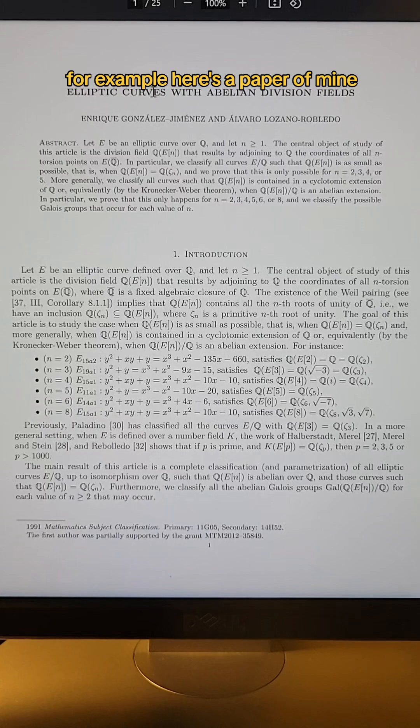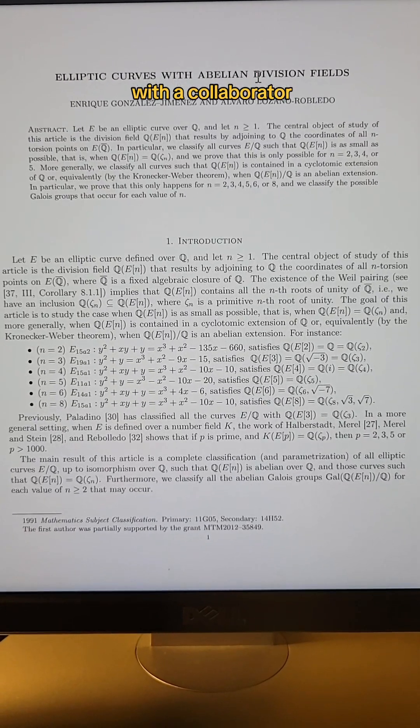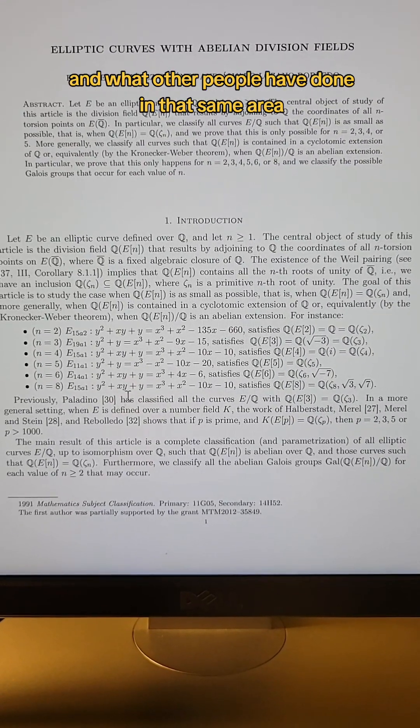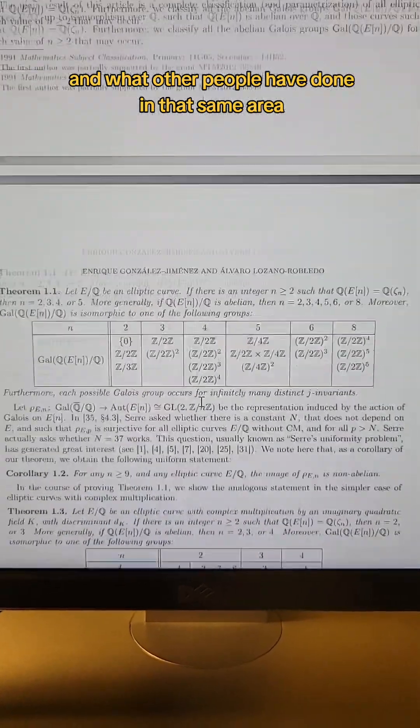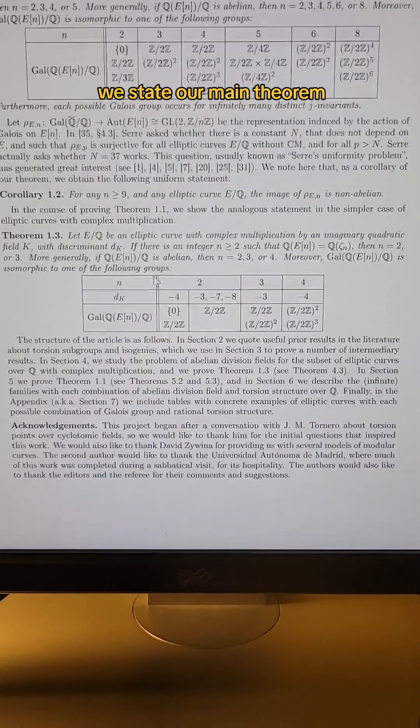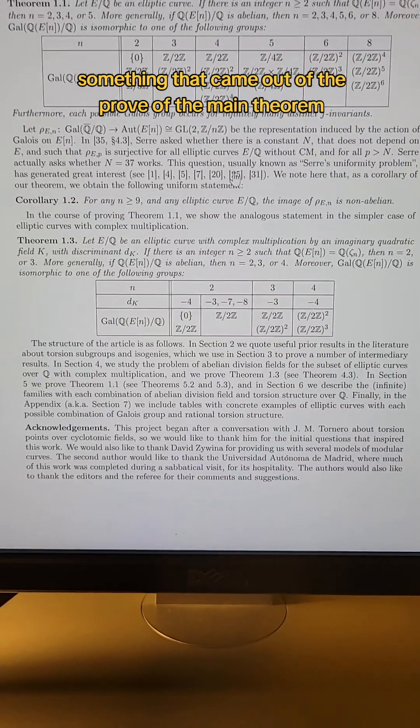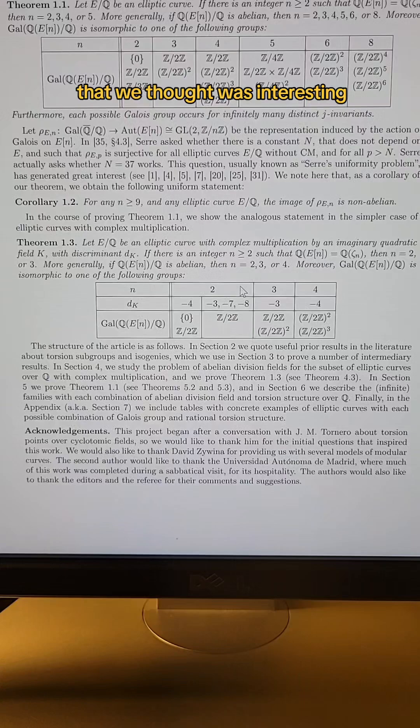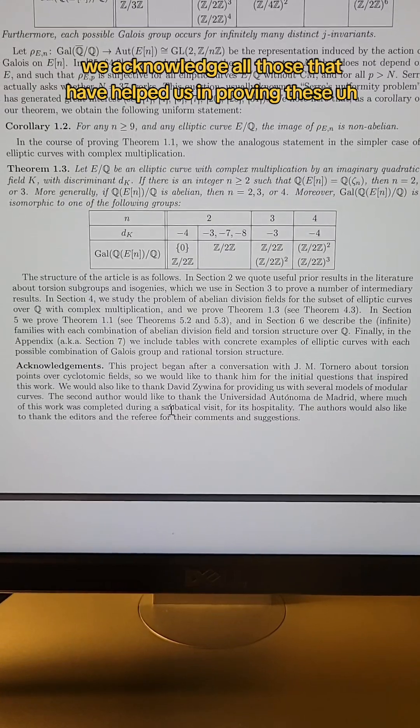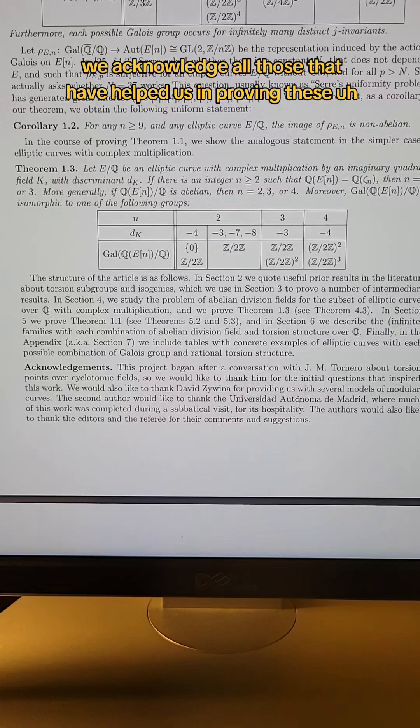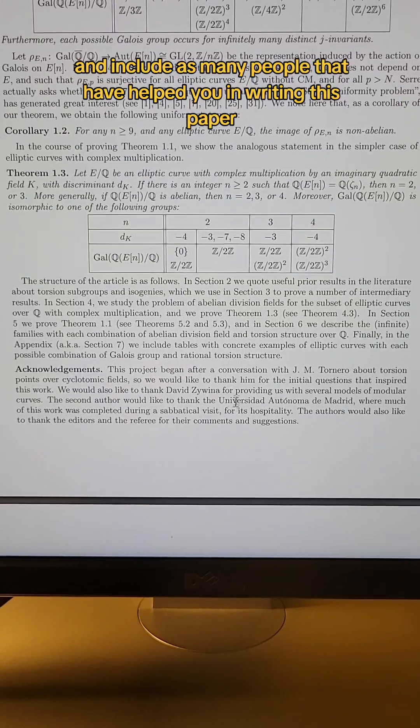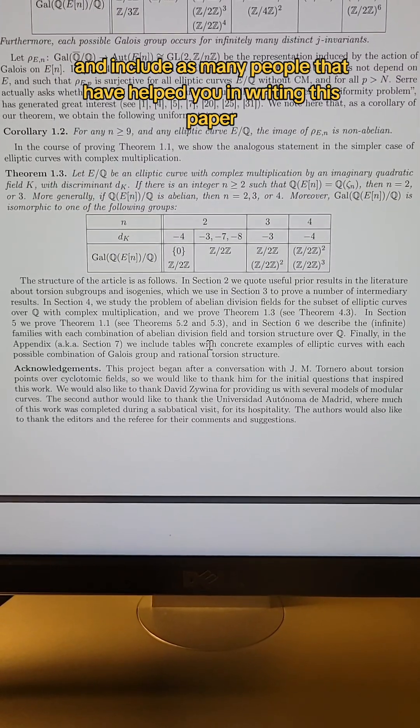For example, here's a paper of mine with a collaborator. Here's the title, the abstract, and then an introduction where we introduce the problem and what other people have done in that same area. And then right away in the second page of the introduction, we state our main theorem, also some corollary, something that came out of the proof of the main theorem that we thought was interesting, and also some secondary main theorem. At the end of the introduction, we acknowledge all those that have helped us in proving these results. And always be kind and generous and include as many people that have helped you in writing this paper.